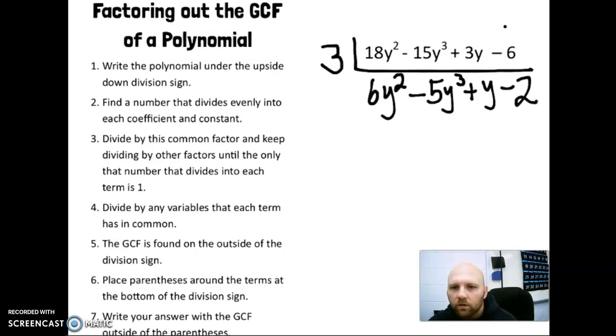We then look to see if we can divide the variables, if any of the variables have a common variable. So we ask ourselves, does each term have at least a y? We see that's not the case because negative 6 does not have a y term or a variable there.